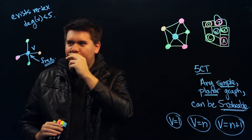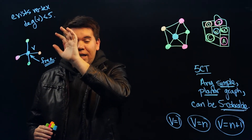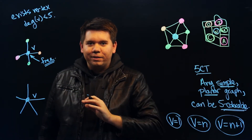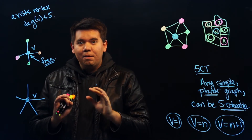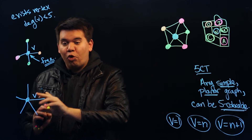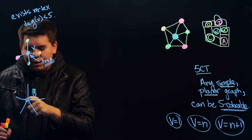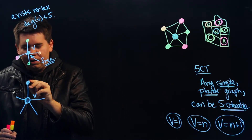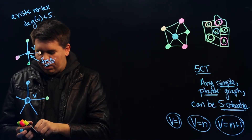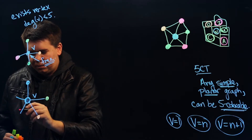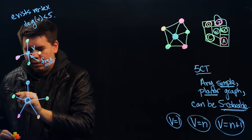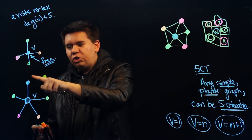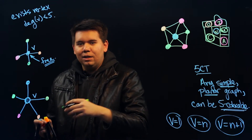But what about the case when the degree of v equals five — what if v is connected to five other vertices by edges? Now we might get into trouble. You might imagine a case where all five neighbors already use all five colors — say blue, yellow, orange, pink, and green. We leave v uncolored for now and think about how we can color it. If all five neighboring vertices use all five colors, there's no color left for v. What we need to do is change some of these colors on the outside, freeing us to color v some other color.